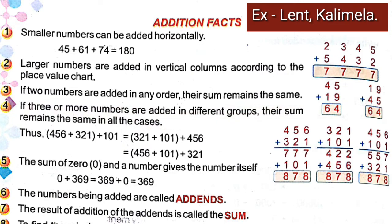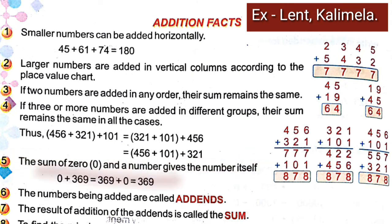The fifth fact is: the sum of zero and a number gives the number itself. That means if we add zero with any number, the answer is the same number. For example, zero plus 369 is equal to 369.